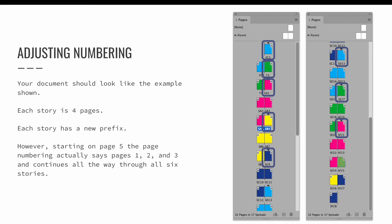Your document should look like the screenshots shown. Each story is exactly four pages. Each has a new prefix label, but starting with the fifth page in the document, the numbering starts at page one and continues through page 24, which is the end of the sixth story.